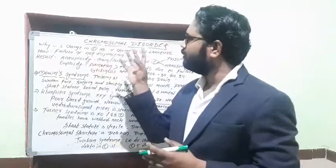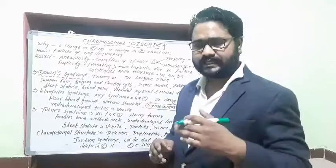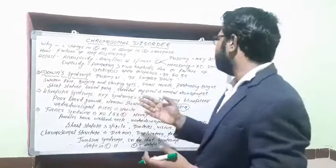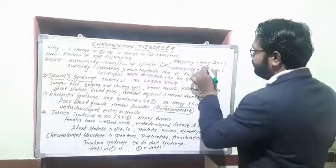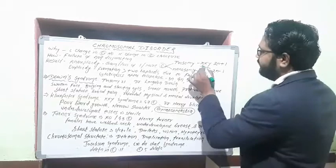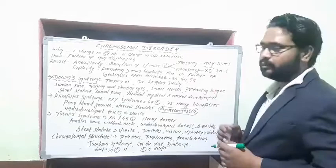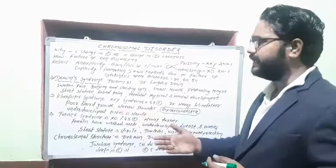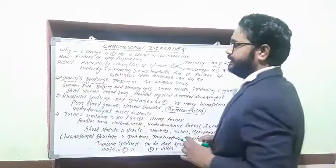Chromosomal abnormalities result in two situations. The first condition is aneuploidy — that is, gain or loss of one or more chromosomes. For example, 46 plus 1 gives XXY (47 chromosomes), which is a gain; or a condition of 45 chromosomes is a loss. So aneuploidy means either 47 or 45 chromosomes.